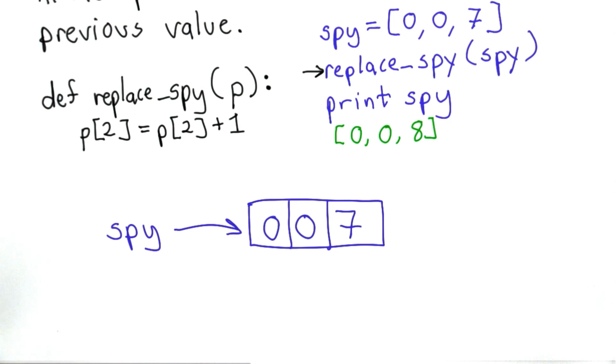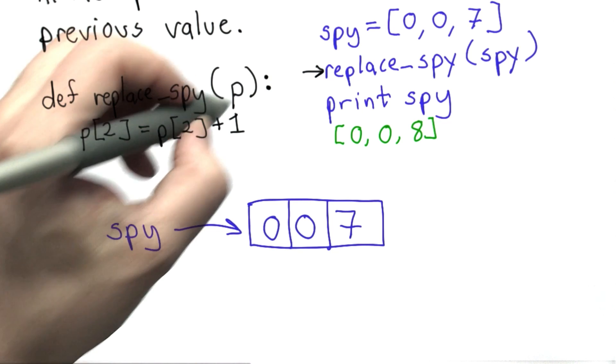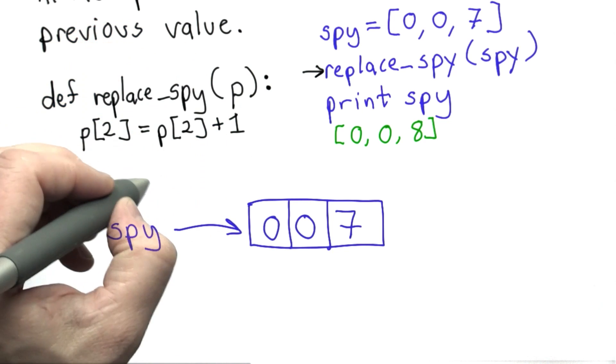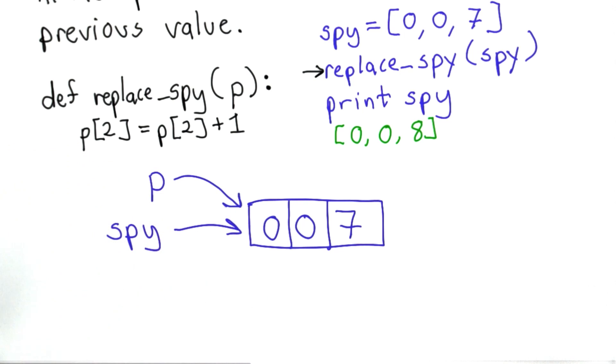What happens when we call a procedure? The name of the variable in the procedure now refers to the object that's passed in. So now the value of p, the parameter here, refers to that object.